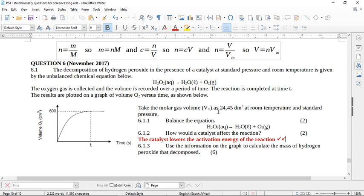So it says to you, take the molar gas volume V_m as 24.45 at room temperature and standard pressure. So this is fine. We're not going to have to use PV equals nRT to solve this.